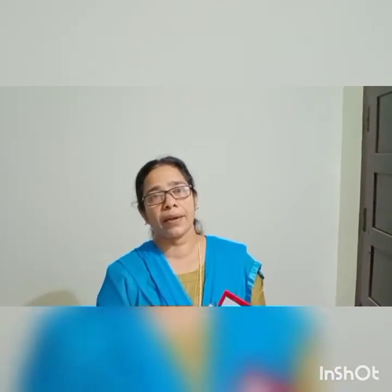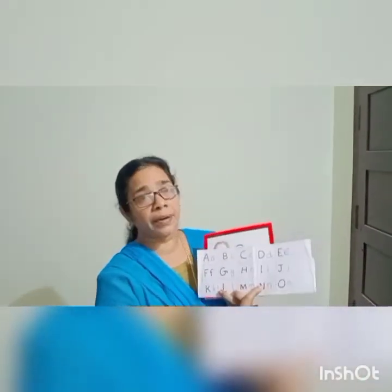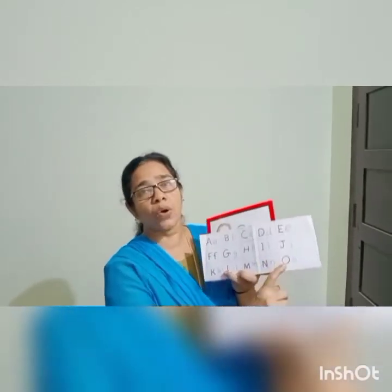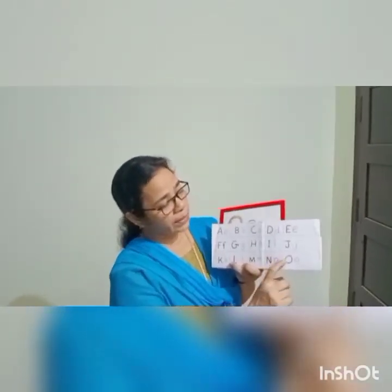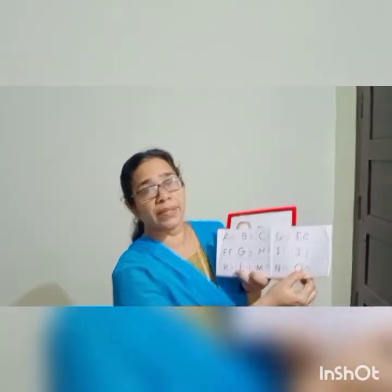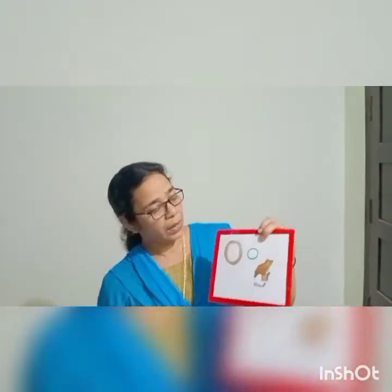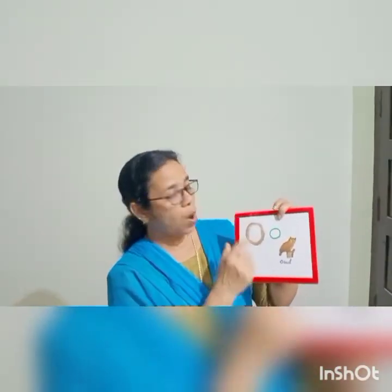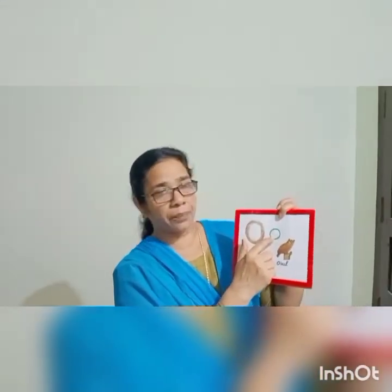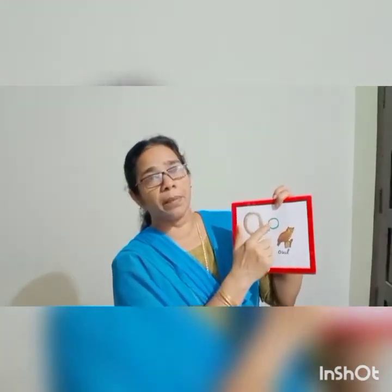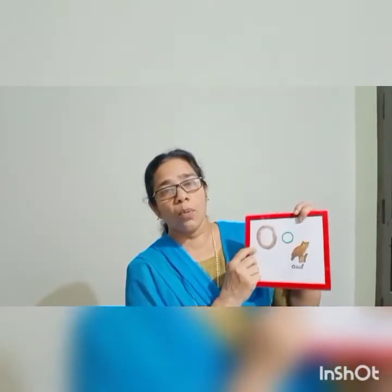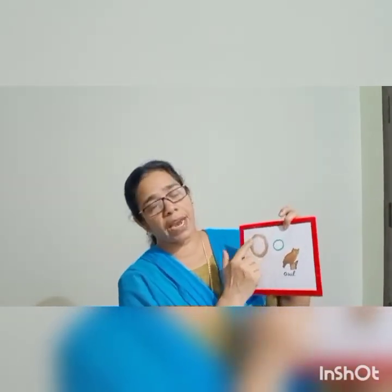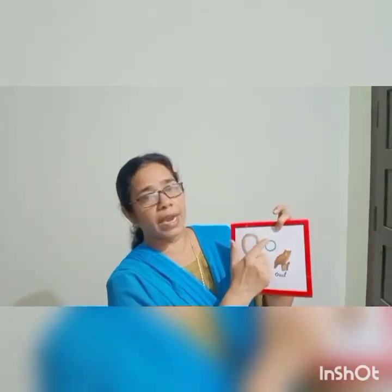Today we are going to learn a new letter that comes after letter N. Which letter comes after N? Yes, letter O. This is capital letter O and this is small letter O — mama letter O and baby letter O. Both are written in the same form.